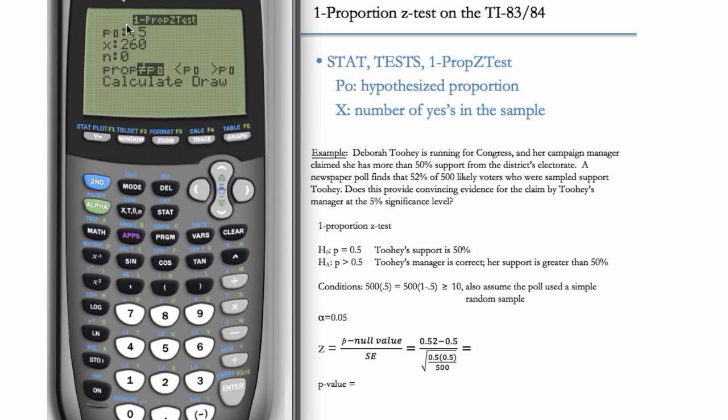So we have P0 as the hypothesized proportion. X is the number of yeses in the sample as an integer. N is our sample size, which is 500. Use the down arrow and the over arrow to find our alternate hypothesis is greater than. So we hit enter here to highlight the greater than, which matches this greater than. Hit the down arrow again and hit enter for calculate.